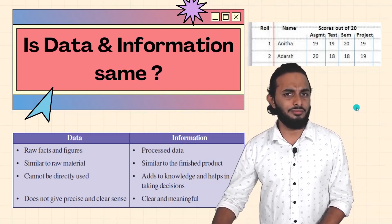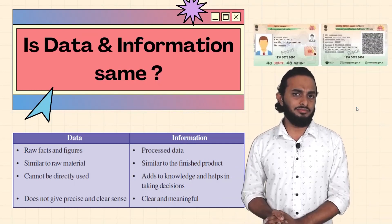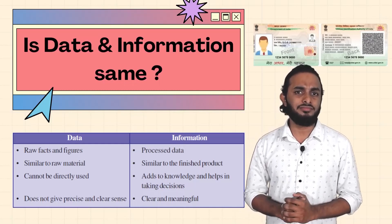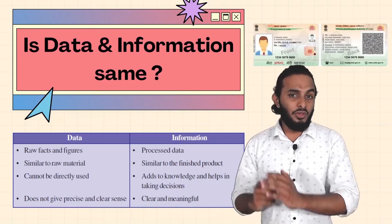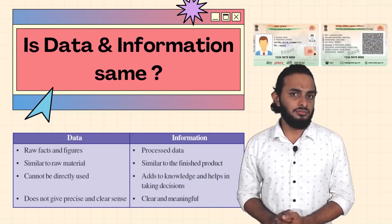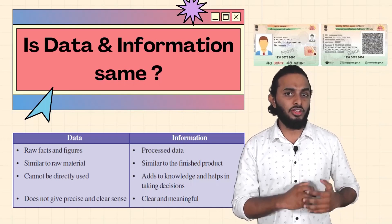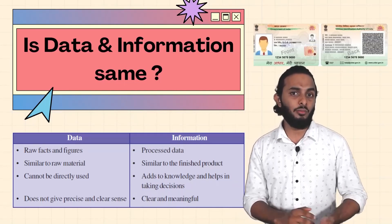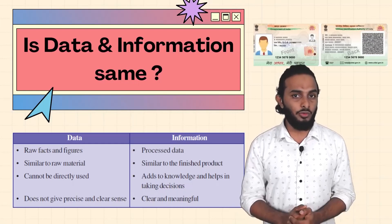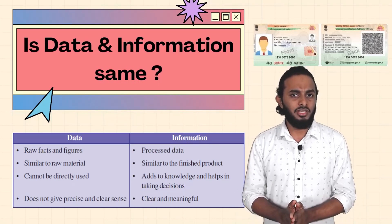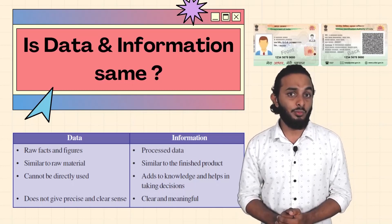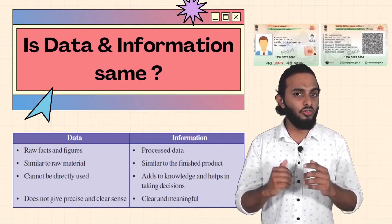You can find some examples. We have an ID card. Here is our name, address, date of birth, and a father's name. Each one which is alone is data. But a collection of this data is called information.